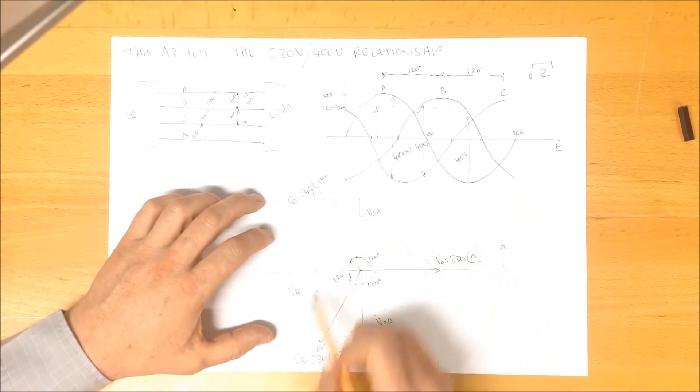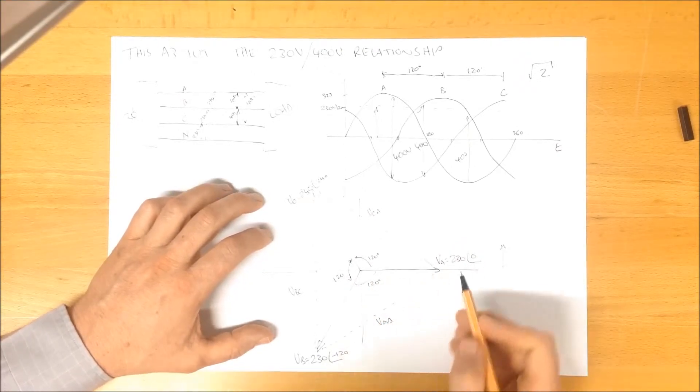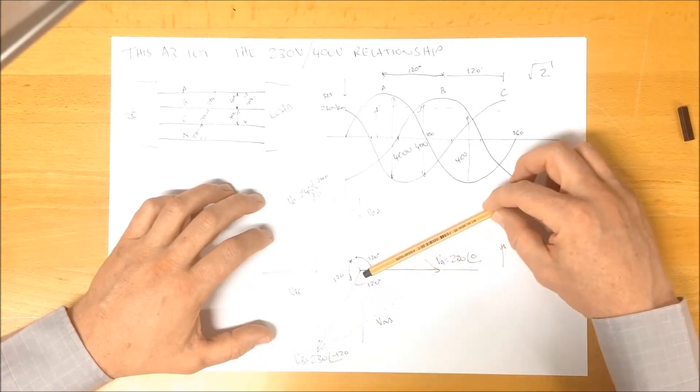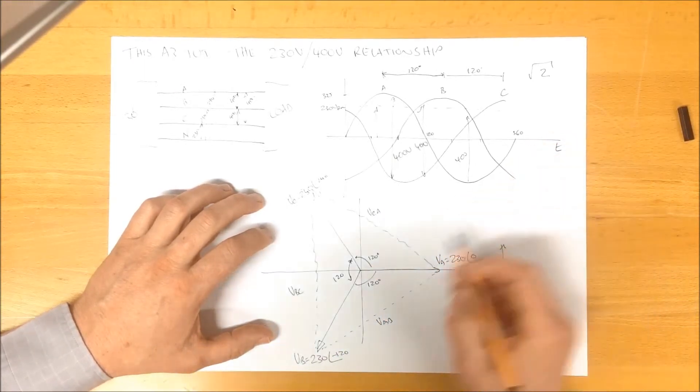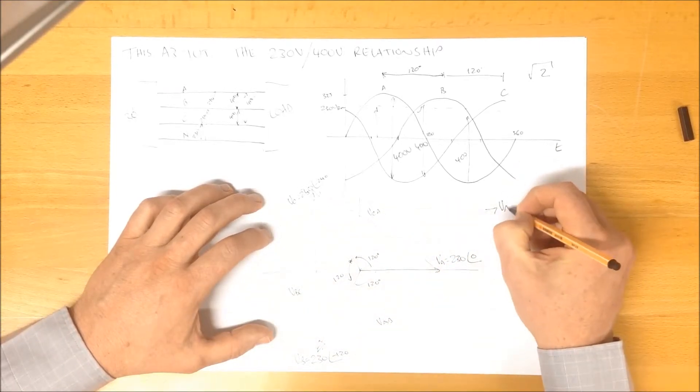What we can therefore do is take these and refer them to our origin. So here we are here. If we were to take this 400 volts here and move it to here, we would end up with a line like that. VAB.